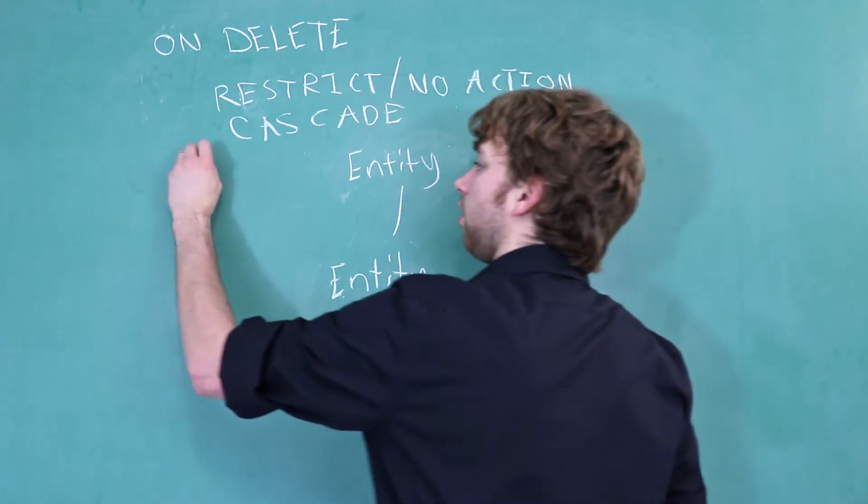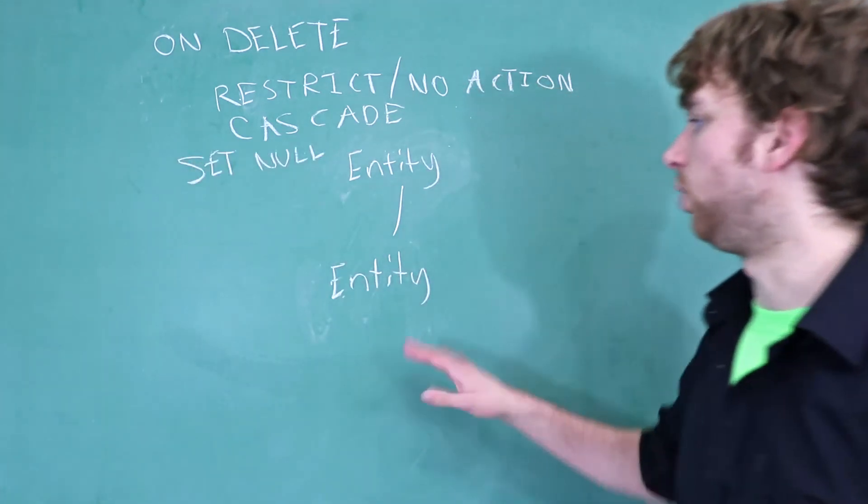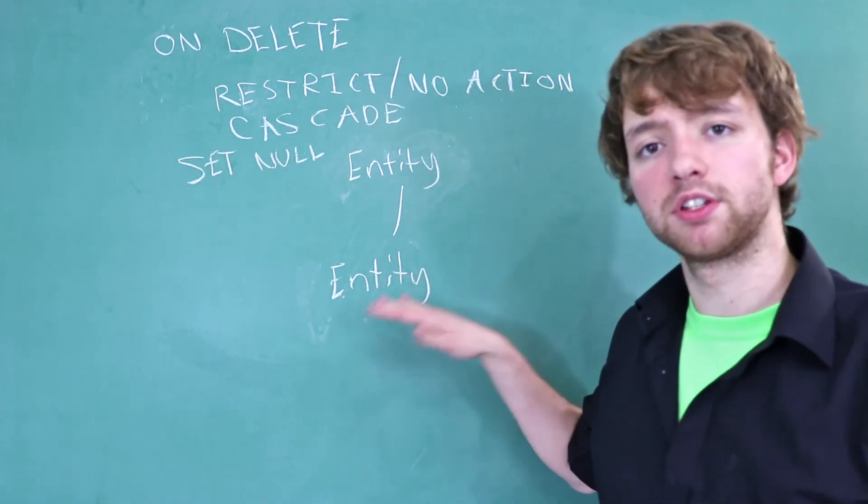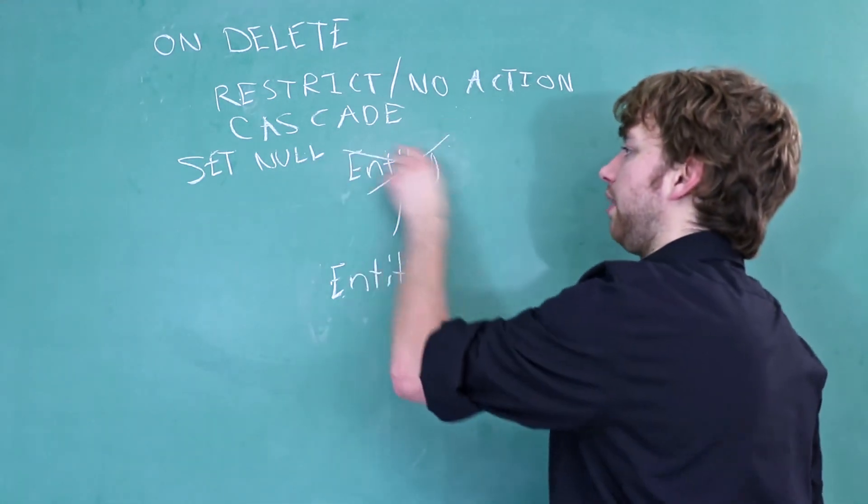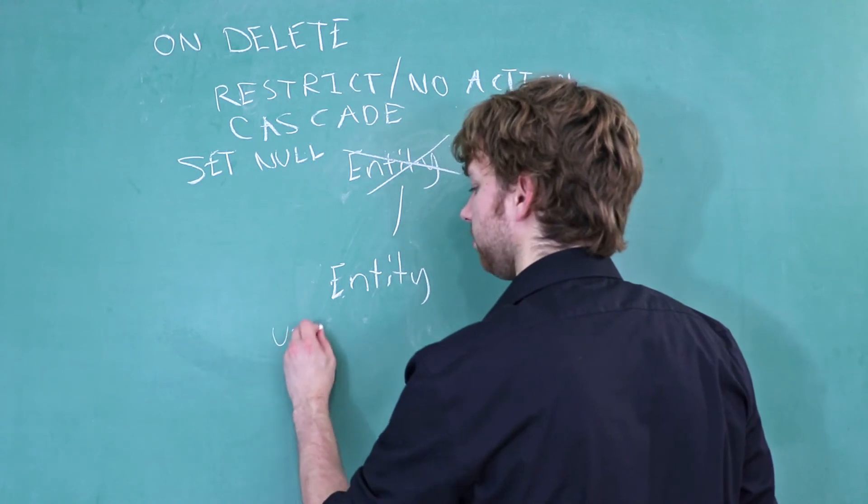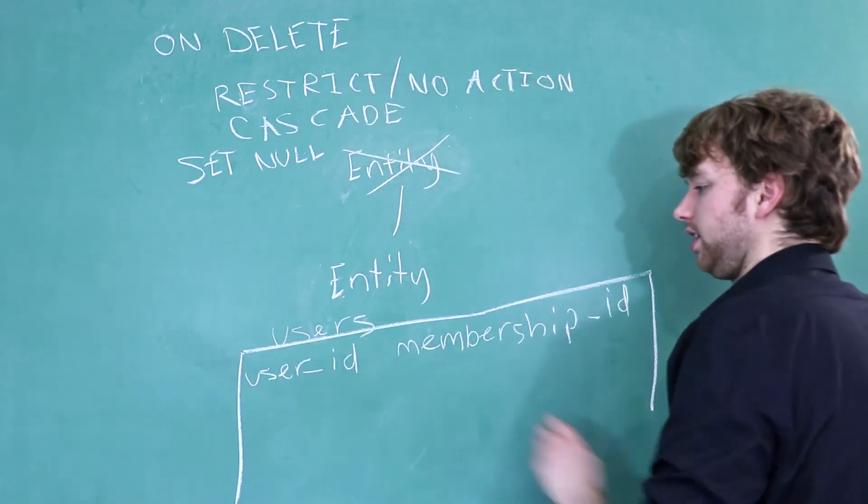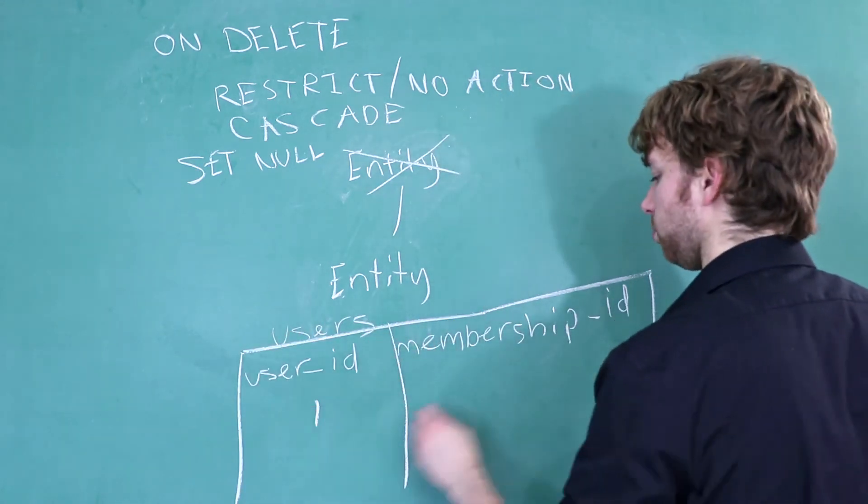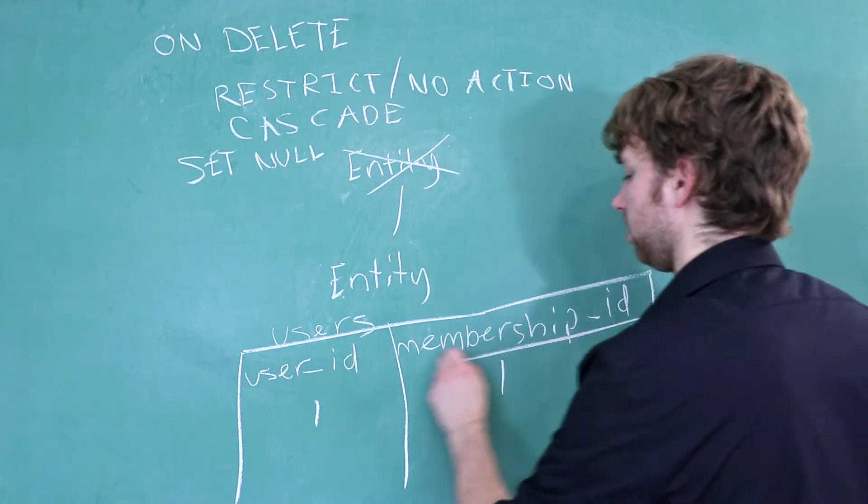The last option is set null. And what this will do, is it will set this reference to null when we delete the parent. So if we have columns, like let's say it's in the user table. So we have a membership ID, and let's say this value is one, and this value is one.